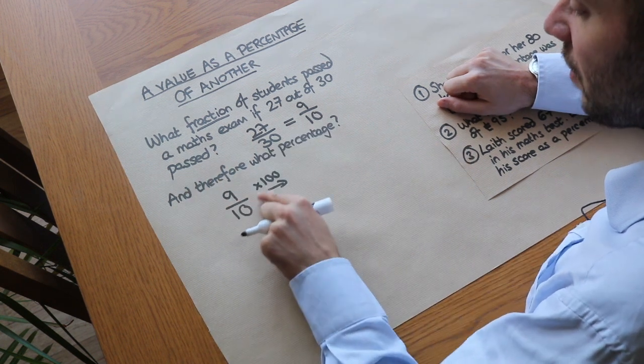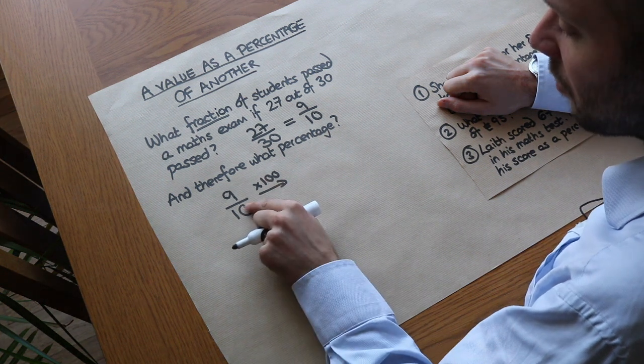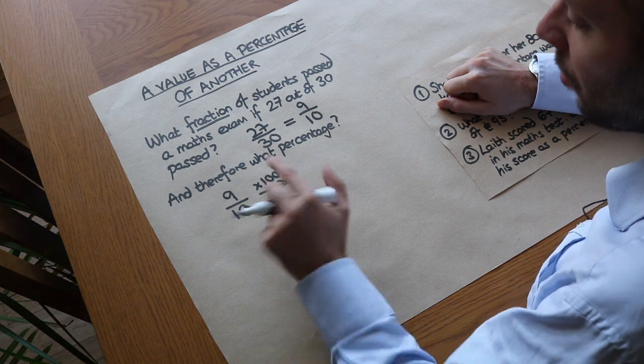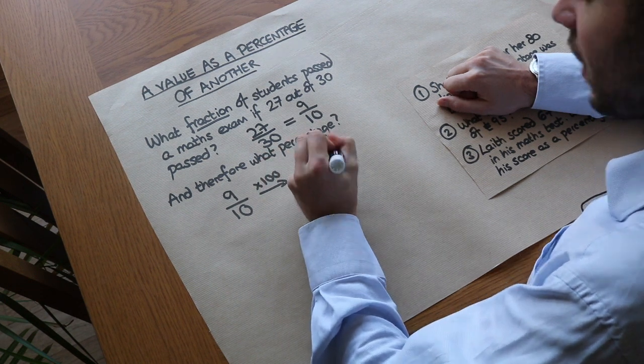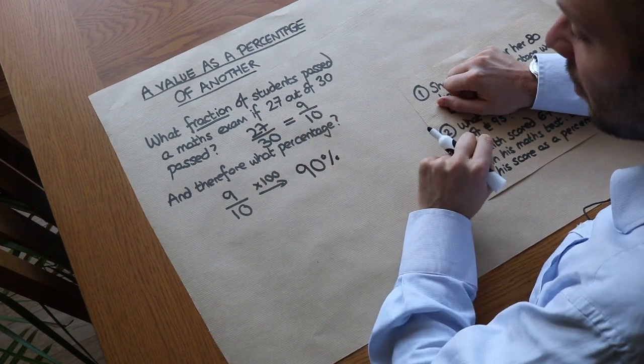When we times 9 tenths by 100, and 9 tenths times 100, you could also say it as 9 tenths of 100. Well, 9 tenths of 100 is 90 percent. So 9 tenths is the same as 90 percent.